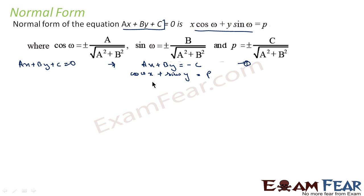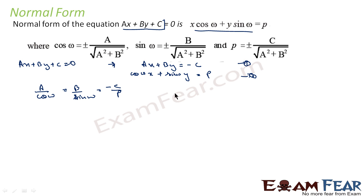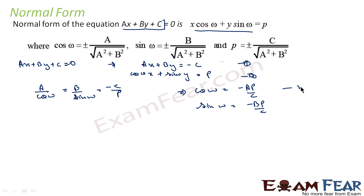Since the two equations are of the same form, we can compare them. Dividing equation (1) by equation (2), we get: a/cosω = b/sinω = −c/p. From this, we obtain cosω = −ap/c and sinω = −bp/c.